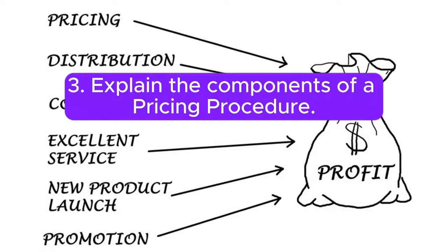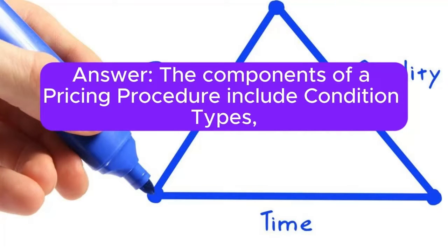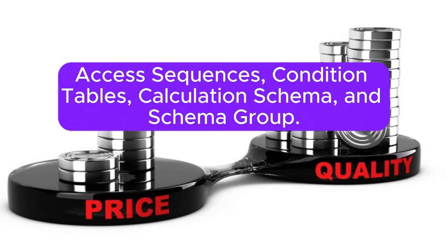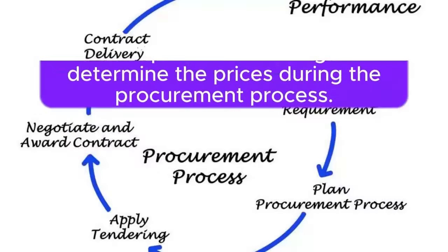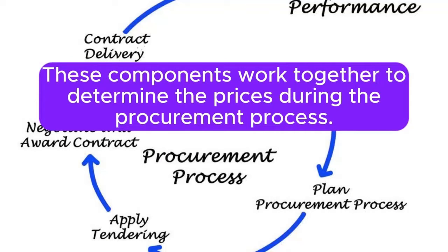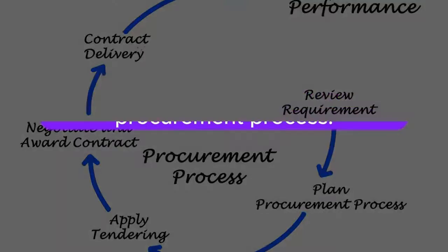Question 3: Explain the components of a pricing procedure. Answer: The components of a pricing procedure include condition types, access sequences, condition tables, calculation schema, and schema group. These components work together to determine the prices during the procurement process.